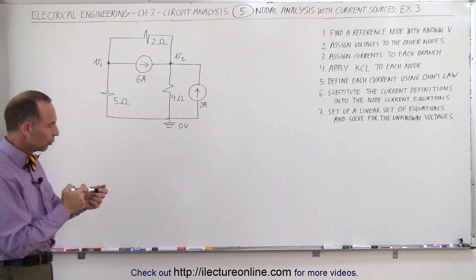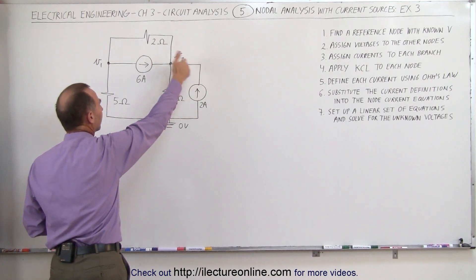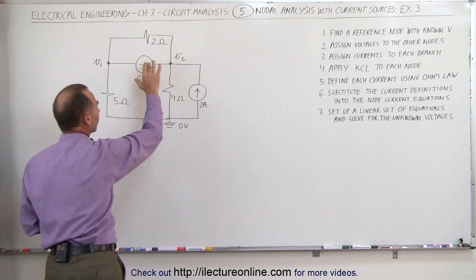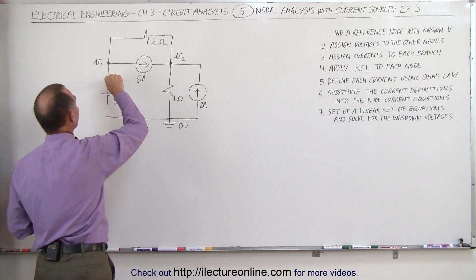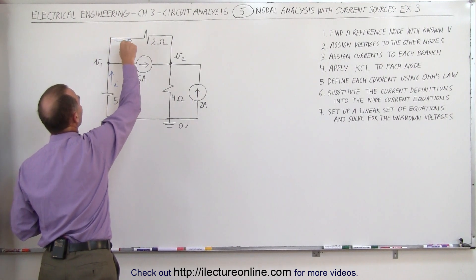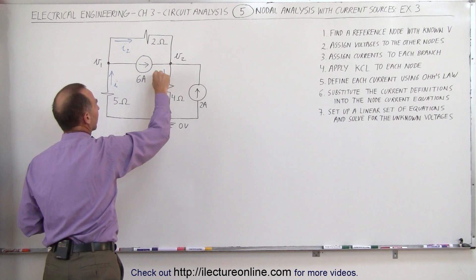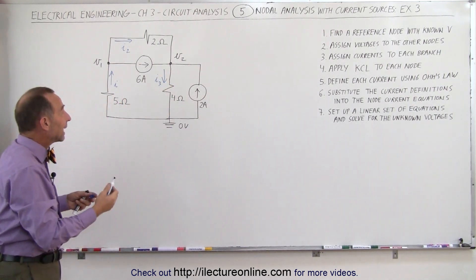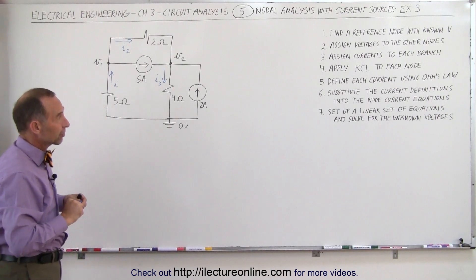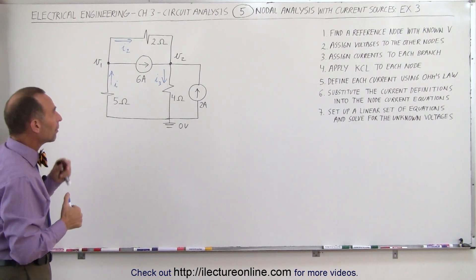We now want to assign currents to the branches. We have two current sources — one in this direction and one in this direction — in those two branches, but we need to find the currents in these three branches. Let's call this current I1, assume it's in this direction, current I2, and current I3. If we chose the wrong direction, we simply get a negative answer indicating it's actually in the opposite direction.